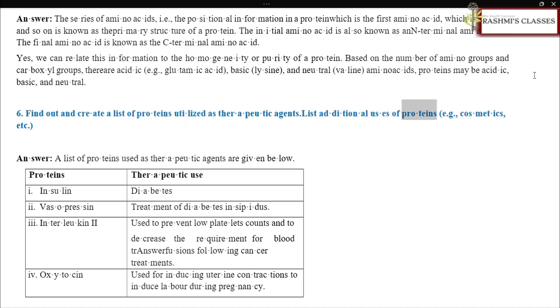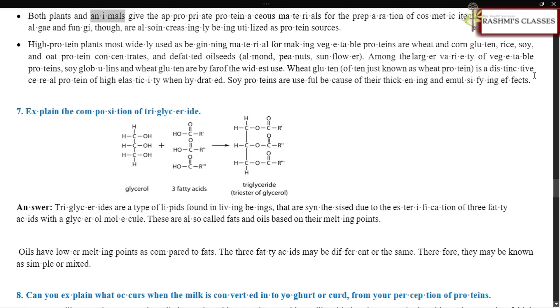Find out and create a list of proteins utilized as therapeutic agents. List additional uses of proteins, example, cosmetics. Answer. A list of proteins used as therapeutic agents are given below. Proteins, therapeutic use. Insulin, diabetes. Vasopressin, treatment of diabetes insipidus. Interleukin-2, used to prevent low platelet counts and decrease the requirement for blood transfusions following cancer treatments. Oxytocin, used for inducing uterine contractions to induce labor during pregnancy.